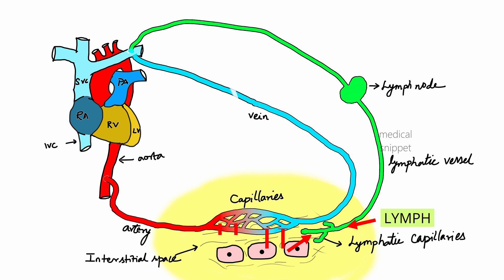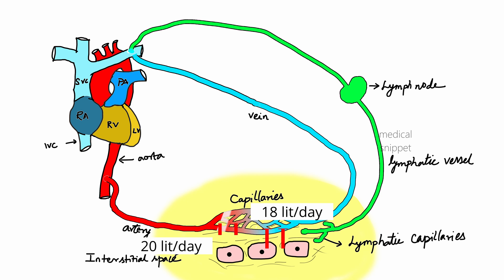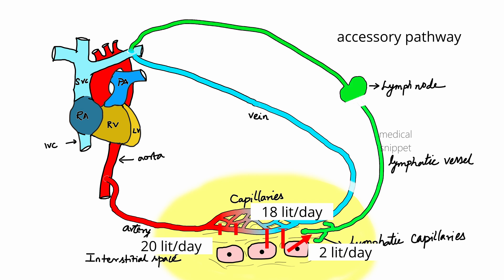On average per day, about 20 liters of fluid is filtered at the arterial end of the blood capillaries, and about 18 liters of this fluid is reabsorbed back at the venous end of the blood capillaries. If this excess 2 liters of interstitial fluid are left behind, it causes tissue edema. This is where the lymphatic system comes into role. It absorbs the excess 2 liters of fluid and drains it back into the circulatory system as lymph. So the lymphatic system forms an accessory pathway to the circulatory system, aiding in drainage of the tissue fluid back into circulation.